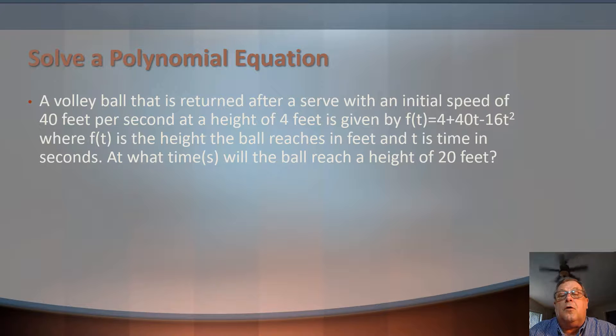that is returned after a serve with an initial speed of 40 feet per second at a height of 4 feet is given by the function f(t) = 4 + 40t - 16t². Where f(t) is the height the ball reaches in feet and t is time in seconds. At what time will the ball reach a height of 20 feet?